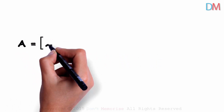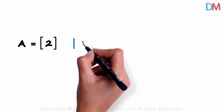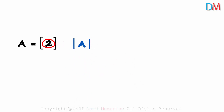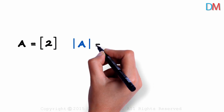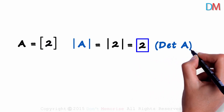How do we find the determinant of matrix A? It is a one by one matrix — one row and one column. As there is just one element in the matrix, it will be written as the determinant of that element: the determinant of 2. The determinant of a one by one matrix is equal to the only element present in the matrix. Here the only element is 2, so the determinant of matrix A will be 2.